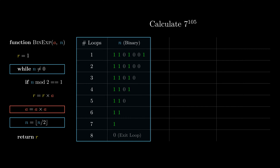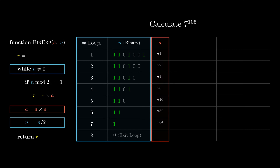Now let's look at the code in red. At the end of each iteration, a becomes a squared. Let's observe how it changes. At the beginning, a is equal to 7. In the first iteration, a is 7 to the power of 1. In the following iterations, a becomes 7 to the power of 2, to the power of 4, to the power of 8, and so on. Until finally, it becomes 7 to the power of 64.